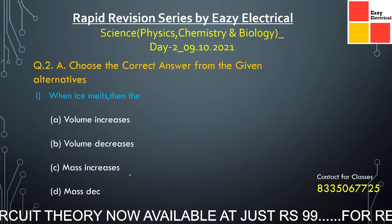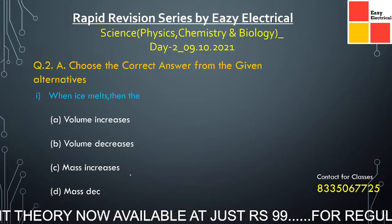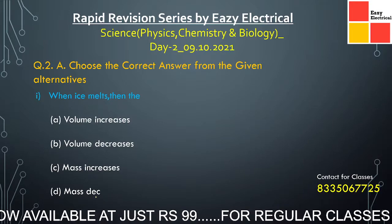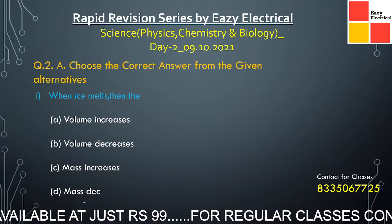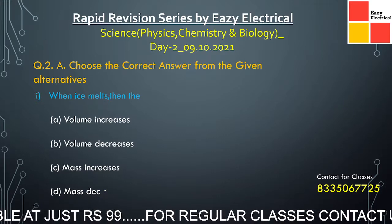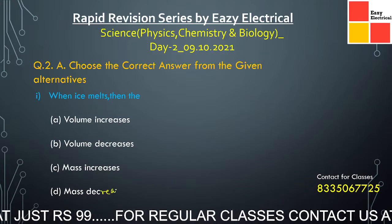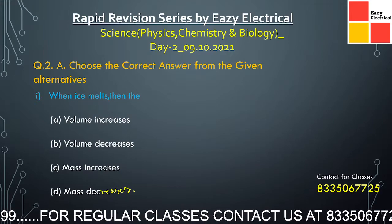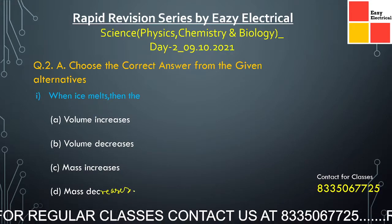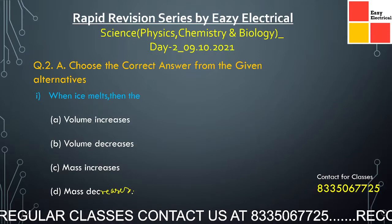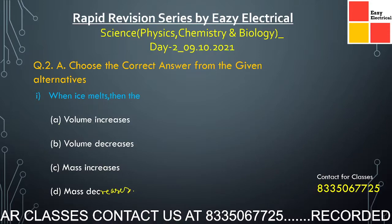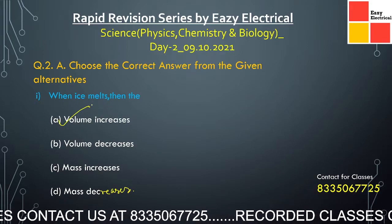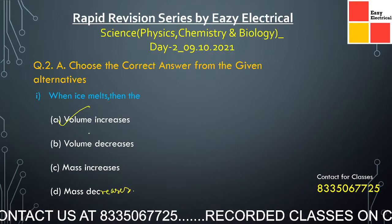Next question: when ice melts, does the volume increase, volume decrease, mass increase, or mass decrease? There is a printing mistake in the options. The correct option is that the volume increases. As density increases, volume decreases, but here for ice the volume of the fluid increases.